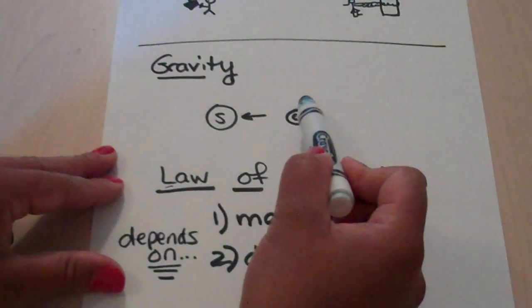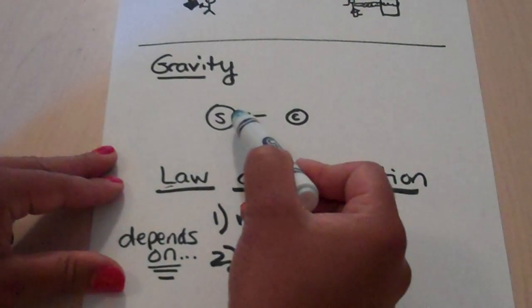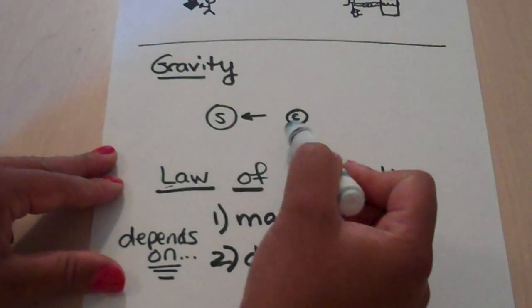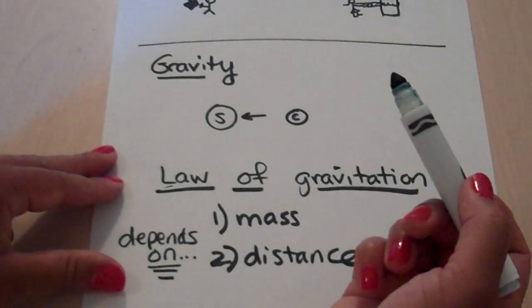But the part that's important is that it's attracted this way. It wants to slam into the sun. There's a reason why it does not, and we'll get to that when we talk about inertia in one second.